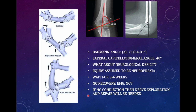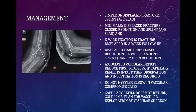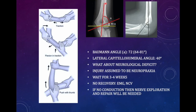To assess whether reduction is adequate, radiological markers are used. The Baumann angle is the angle between the capituloepiphyseal line and the diaphyseal line of the humerus on AP view — normally 64 to 81 degrees, average 72 degrees. This should be restored to the normal range; ideally, get an X-ray of the opposite side to match the Baumann angle. On the lateral view, check the lateral capitulo-humeral angle — normally 40 degrees — subtended by lines through the capitulum and diaphysis.